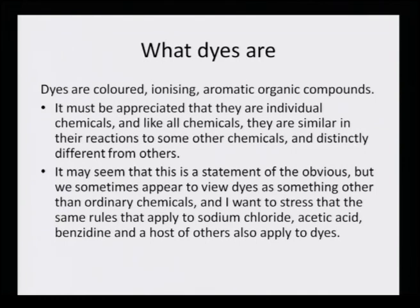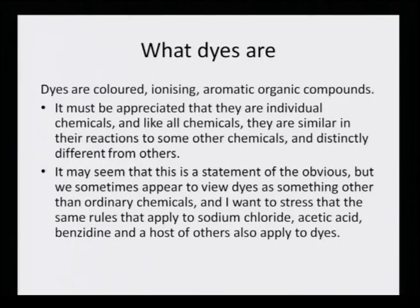What are dyes? Dyes are colored, ionizing, aromatic, organic compounds. It must be appreciated that they are individual chemicals and, like all chemicals, they are similar in their reactions to some other chemicals and distinctly different from others. Whether they are synthetic dyes or natural dyes, they have these salient features in common: they are colored compounds and they may or may not be completely aromatic, but they do have a lot of conjugation. That means they have in their structural detail a lot of alpha-beta unsaturated carbon systems in the entire molecular structure.